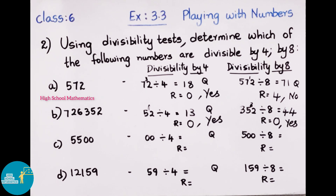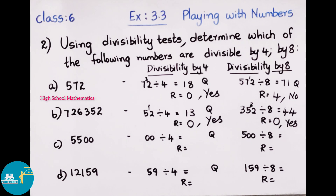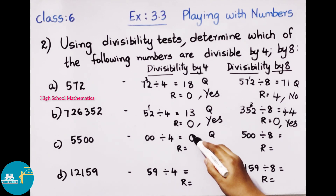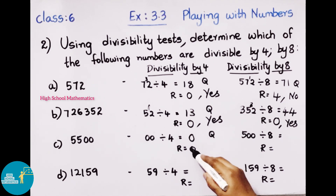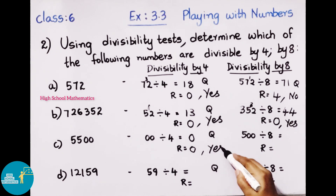Next number: 5,500. To check divisibility by 4, take the last 2 digits: 00. Dividing 00 by 4 gives quotient 0 and remainder 0. Since remainder is 0, yes, 5,500 is divisible by 4.